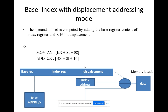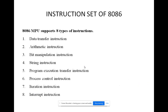Next, base index with displacement addressing mode: the offset is computed by adding the base register to the content of the index register, plus an 8-bit or 16-bit displacement. This combined value gives the memory location, and the data there is moved to the AX register or added to the CX register.